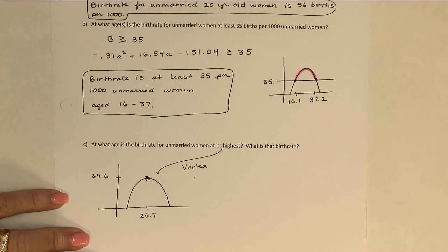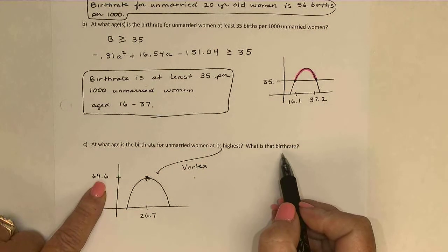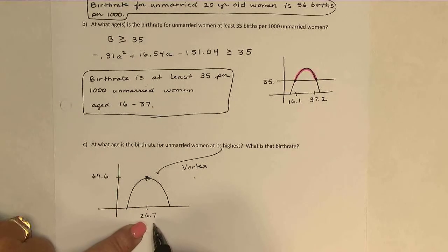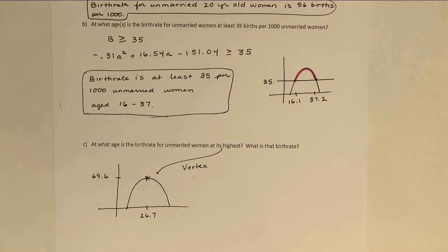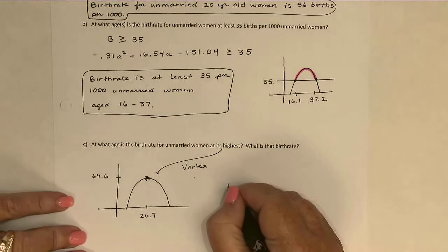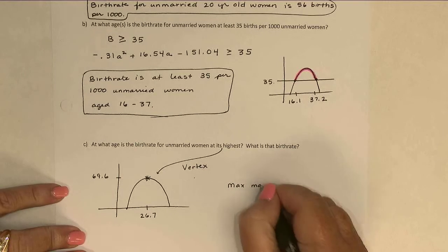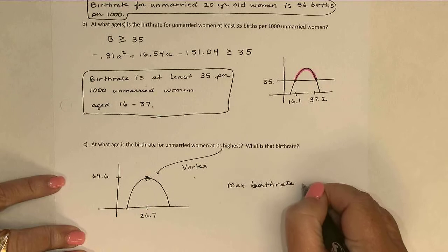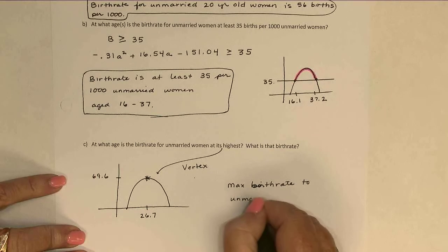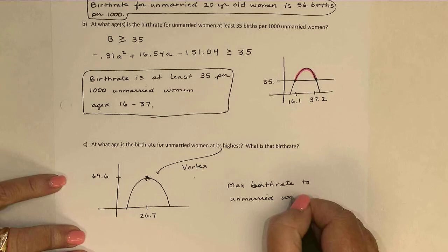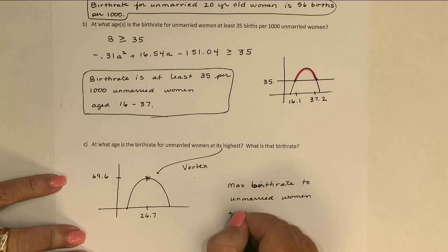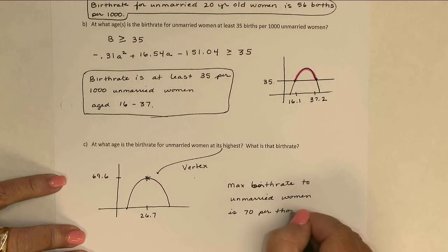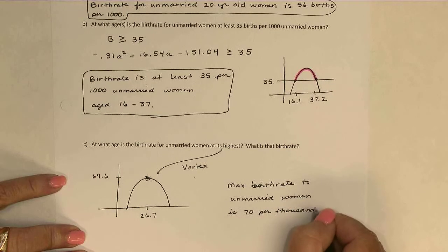And it looks like about 26.7 for the x and the y is about 69.6. So the precise answer would be the highest birth rate is about 69.6 births per thousand. Now, usually we don't talk about ages like that, so I might round a little bit and say that the maximum birth rate for unmarried women is about 70 per thousand at age about 27.